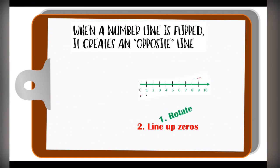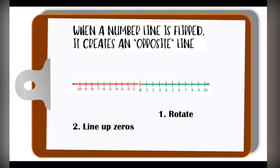Here you see a number line like the one we just labeled from 0 to 10. If I rotate it and slide it over so that the zeros are lined up, it creates an opposite effect.